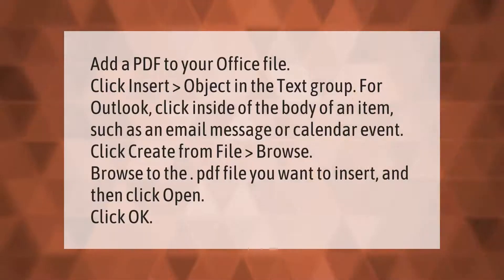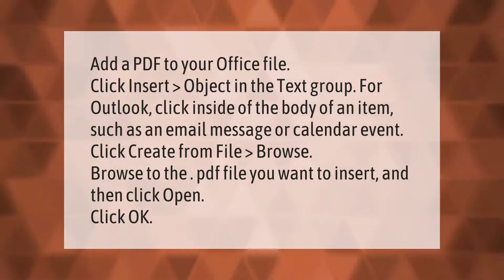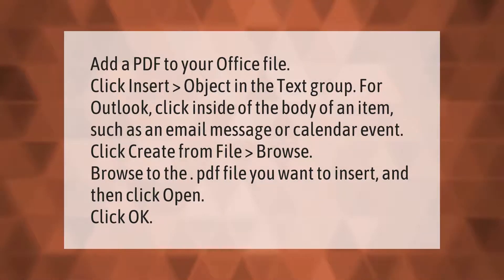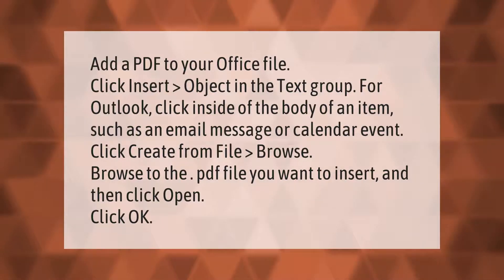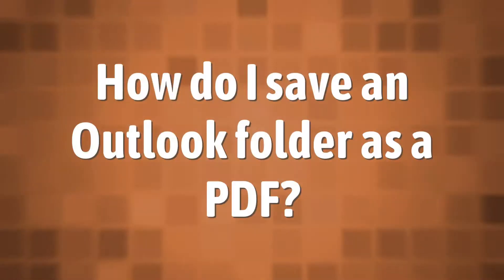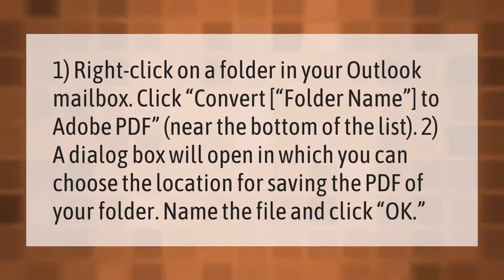To add a PDF to your Office file, click Insert, then Object in the text group. For Outlook, click inside the body of an item such as an email message or calendar event. Click Create from File, then Browse to the PDF file you want to insert, and click Open. Click OK.